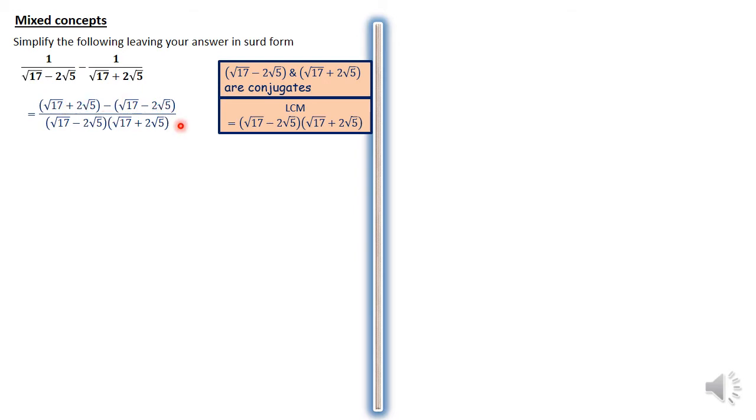Simplifying this, in the numerator we are going to have 17 minus 17 at some point, so the root 17 will go away. But the 2 root 5 is positive here, and you're going to have 2 root 5 being positive again because of the double negative here. So that's going to be 4 root 5.